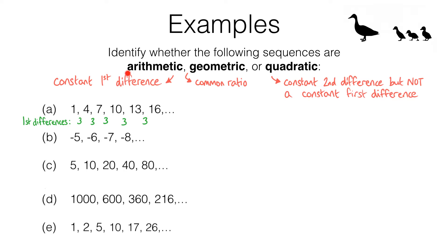So we have an arithmetic sequence. I just want to make clear that all of these are first differences — I'm not just talking about this first one here. The reason for calling them first differences will become clear later in the video. Anyway, let's move on to sequence B.